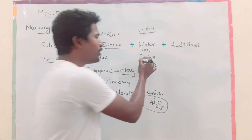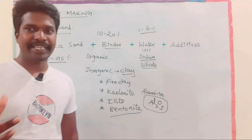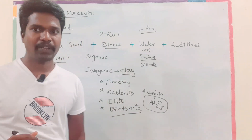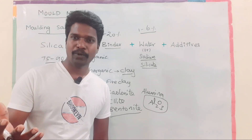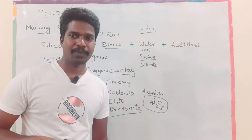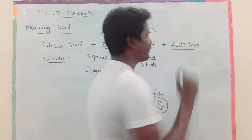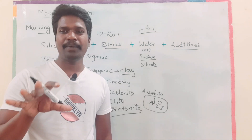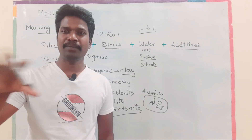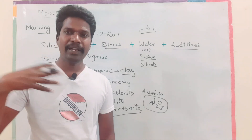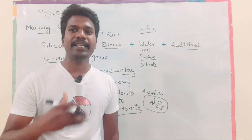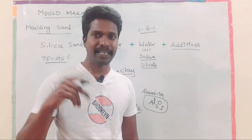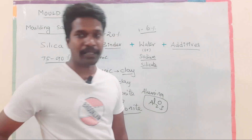Additives in core making — in this part of the video, we will look at additives used in molding sand, including green sand molding, dry sand molding, and sodium silicate processes.